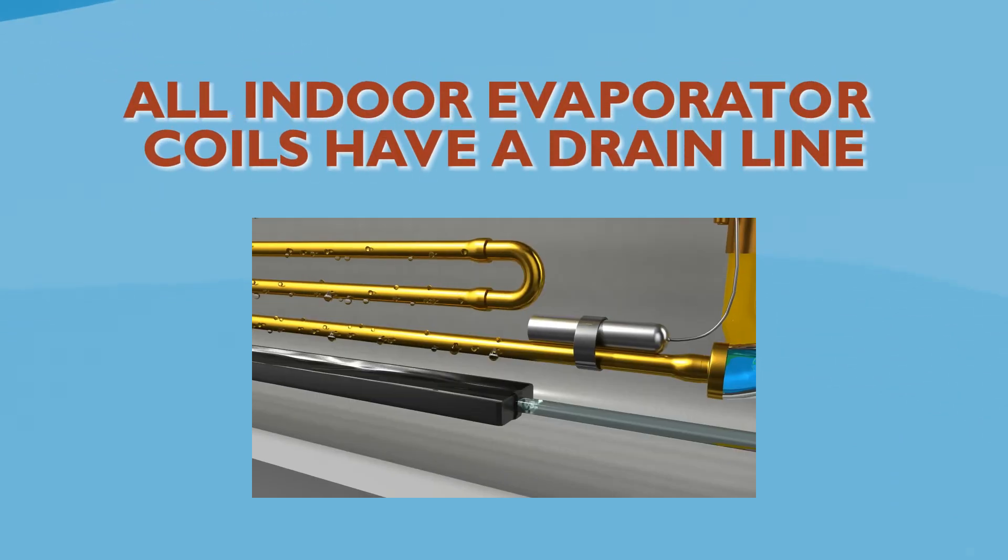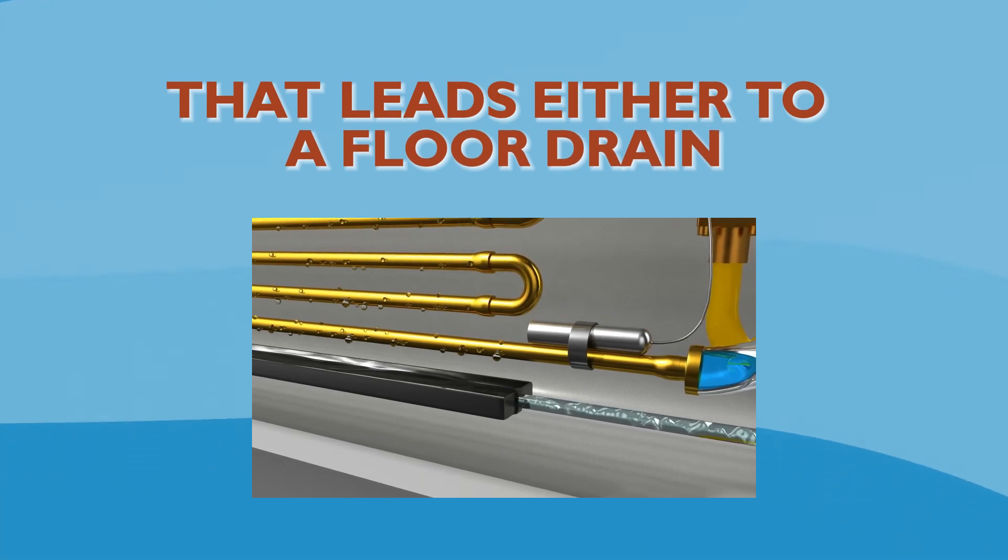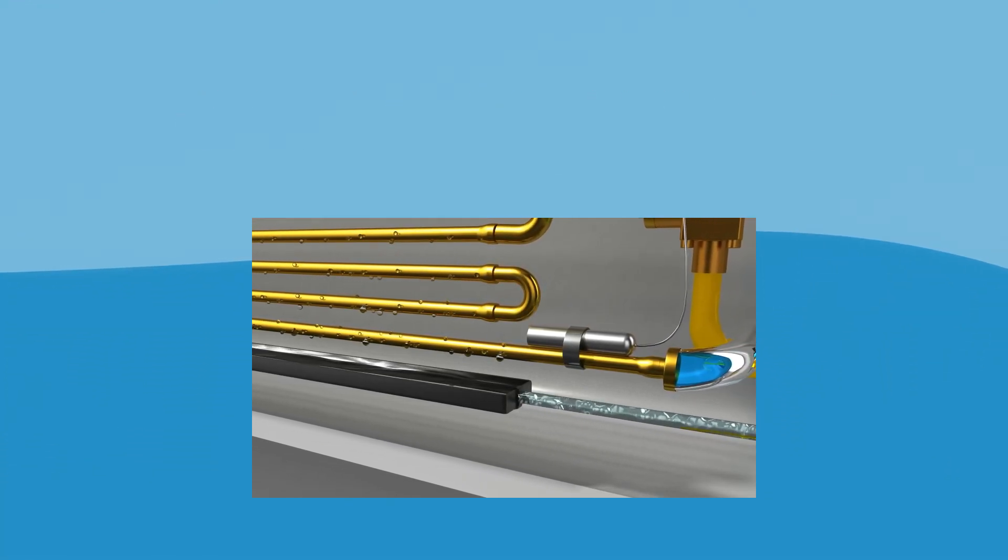All indoor evaporator coils have a drain line that leads either to a floor drain or a condensate pump to remove the condensate it creates.